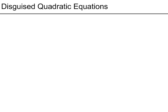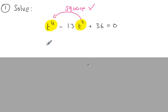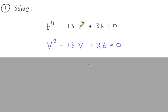Disguised quadratic equations — a new example. We have this equation, and to see if it's a disguised quadratic, I'll use the same method. Just take these terms, ignore any coefficients, and check: does squaring the lower-power term give the higher-power term? Starting with t squared, squaring it gives t to the power of 4. It does, which means we can write this as a disguised quadratic. So I can write this as v squared minus 13v plus 36 equals 0. The substitution used here is v equals t squared, so v squared equals t to the power of 4.